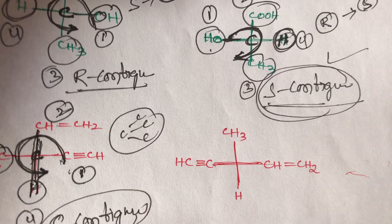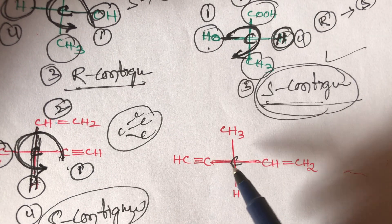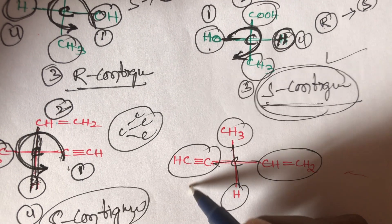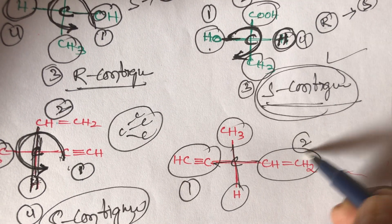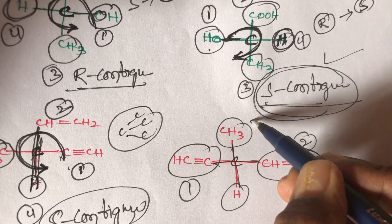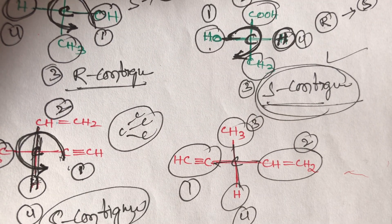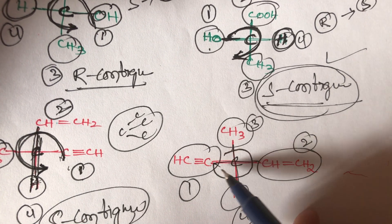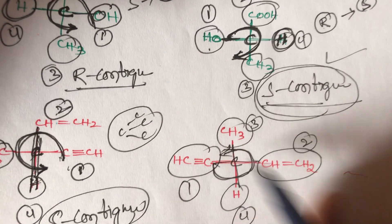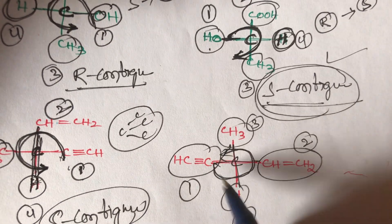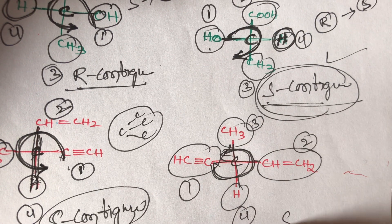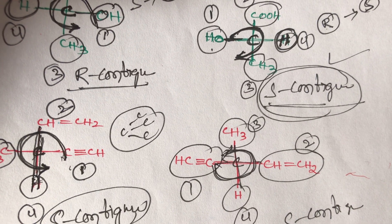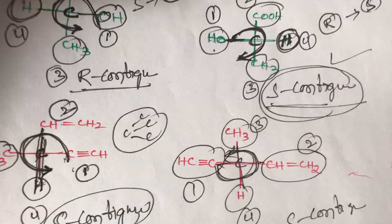The next structure also has triple bond, double bond, methyl group, and hydrogen — same priority order. Going 1 to 2 to 3 is again anti-clockwise direction. This is also S configuration.